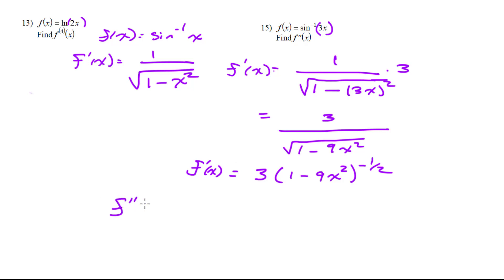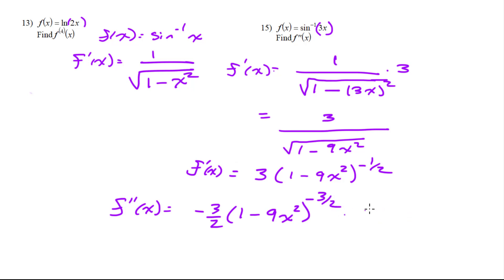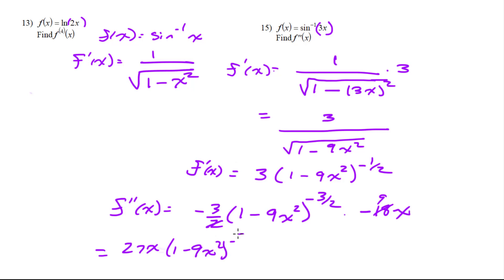Now we take the second derivative. The negative one-half comes out and gets multiplied by 3, giving negative three-halves times (1 minus 9x squared) to the negative three-halves, times the derivative of the inside which is negative 18x. Simplifying: negative three-halves times negative 18x — the 2s cancel — giving 27x times (1 minus 9x squared) to the negative three-halves, or 27x over the square root of (1 minus 9x squared) cubed.